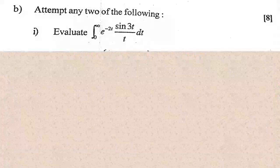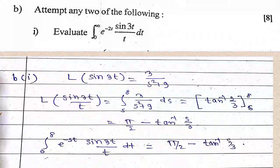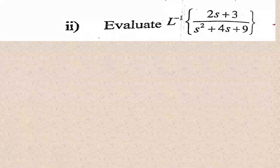Part B: attempt any two. Evaluate ∫₀^∞ e^(-2t) sin(3t)/t dt. L{sin(3t)} = 3/(s²+9). L{sin(3t)/t} = ∫ₛ^∞ 3/(s²+9) ds = [tan⁻¹(s/3)]ₛ^∞ = π/2 - tan⁻¹(s/3). Hence ∫₀^∞ e^(-st) sin(3t)/t dt = π/2 - tan⁻¹(s/3). Substituting s = 2: the answer is π/2 - tan⁻¹(2/3).